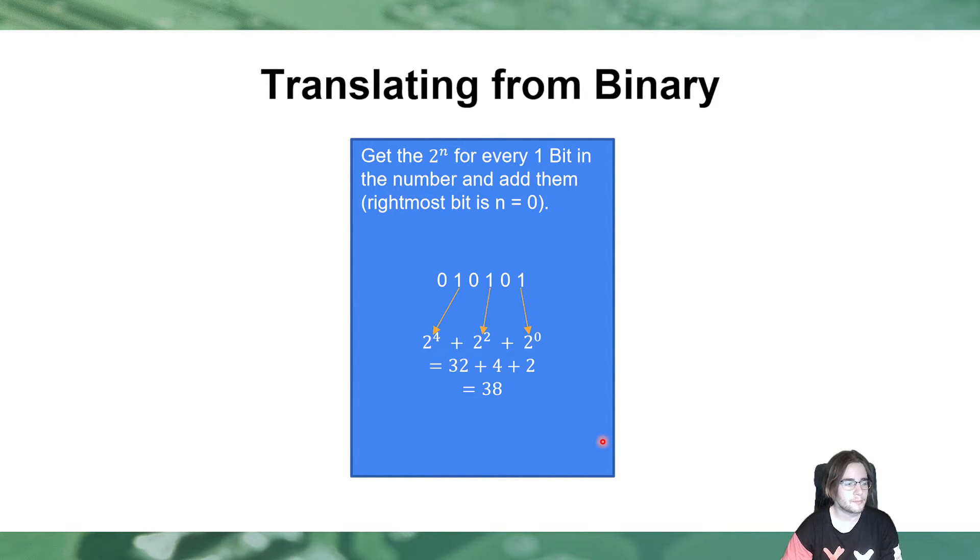Translating from binary, it's just the 2 to the power of something variant but backwards. We just get every bit that is 1 in the number, and then, we do the bit number and 2 to the power of the bit position, and add those together. Though, always remember, the rightmost bit, the smallest bit, is 2 to the power of 0. 2 to the power of 0 is 1.